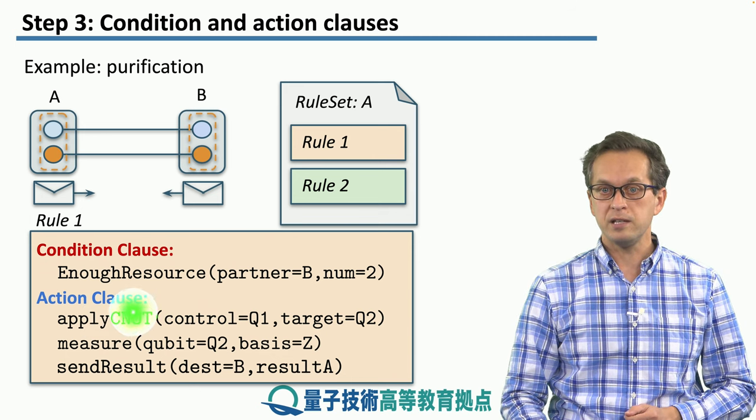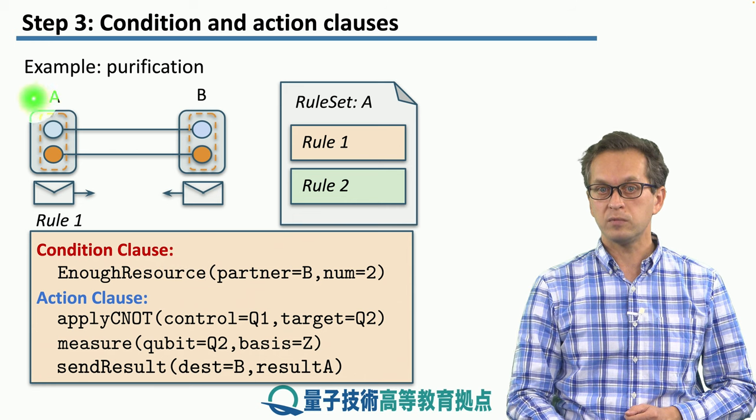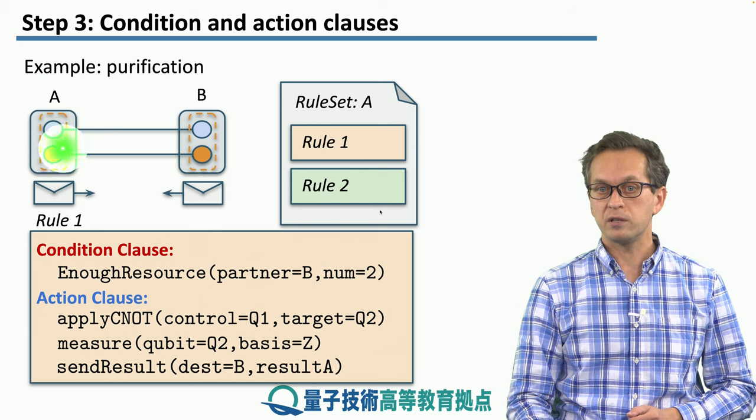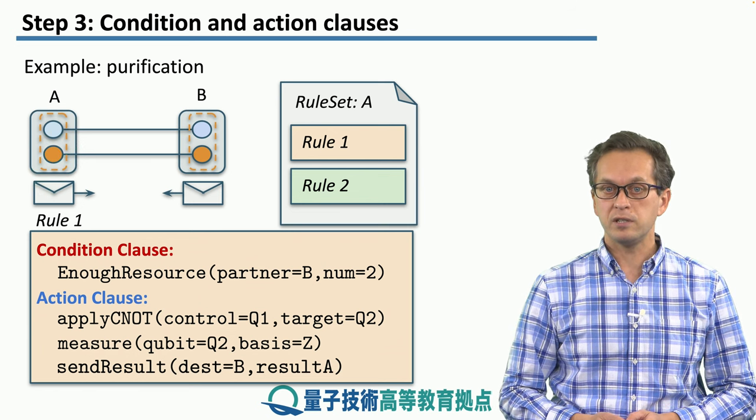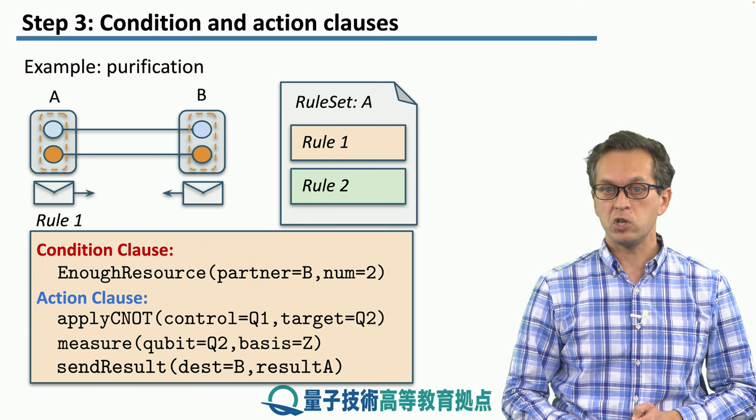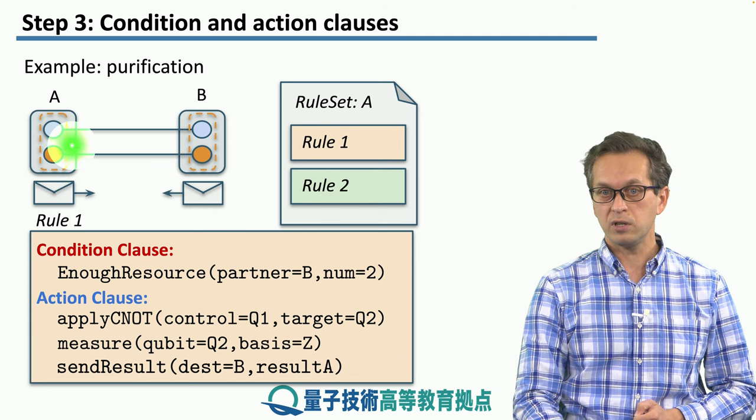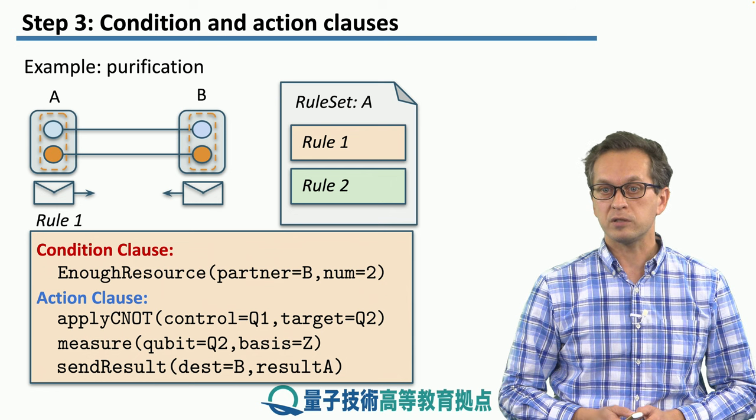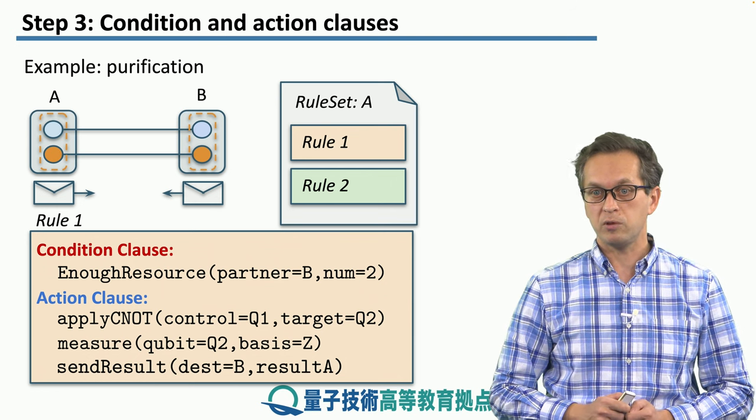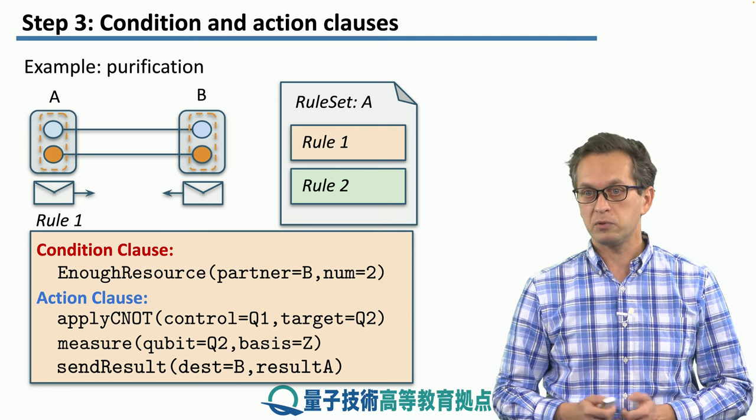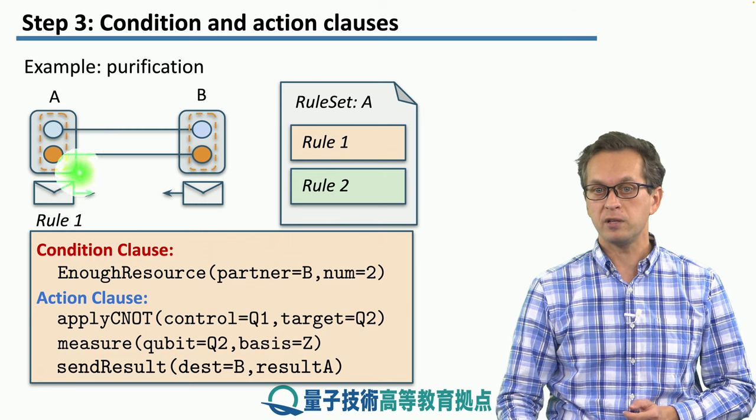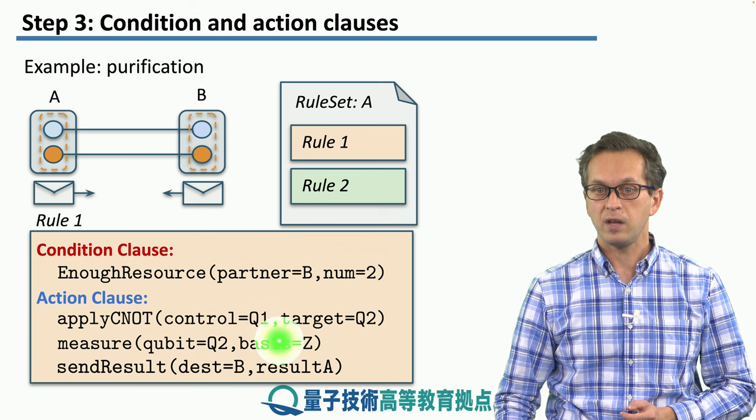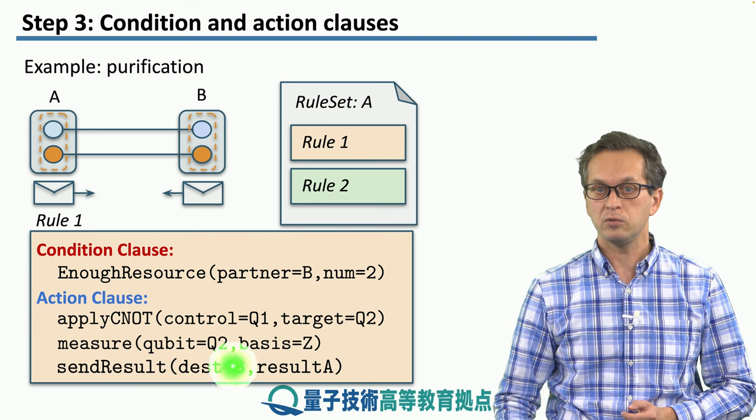Node A applies a CNOT gate, where qubit 1, this blue qubit, is the control, and the orange qubit, qubit 2, is the target. After the CNOT, node A measures qubit 2, the orange qubit, in the Z basis. And it puts the classical outcome in a classical message and sends it to node B. If we wanted to write this rule for node B, it would look very similar. We would just have to change the partner address over here and also send the result to destination A.